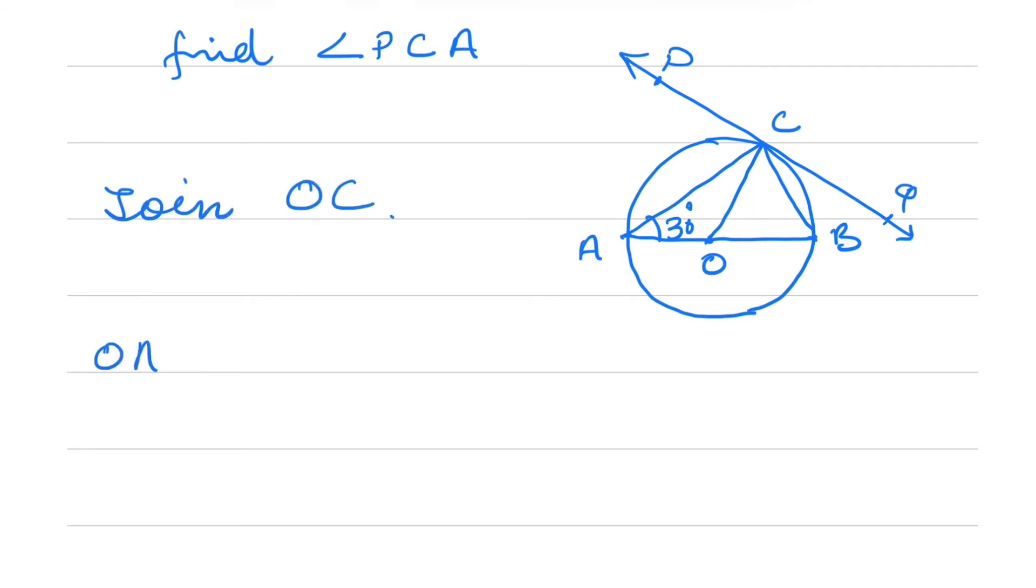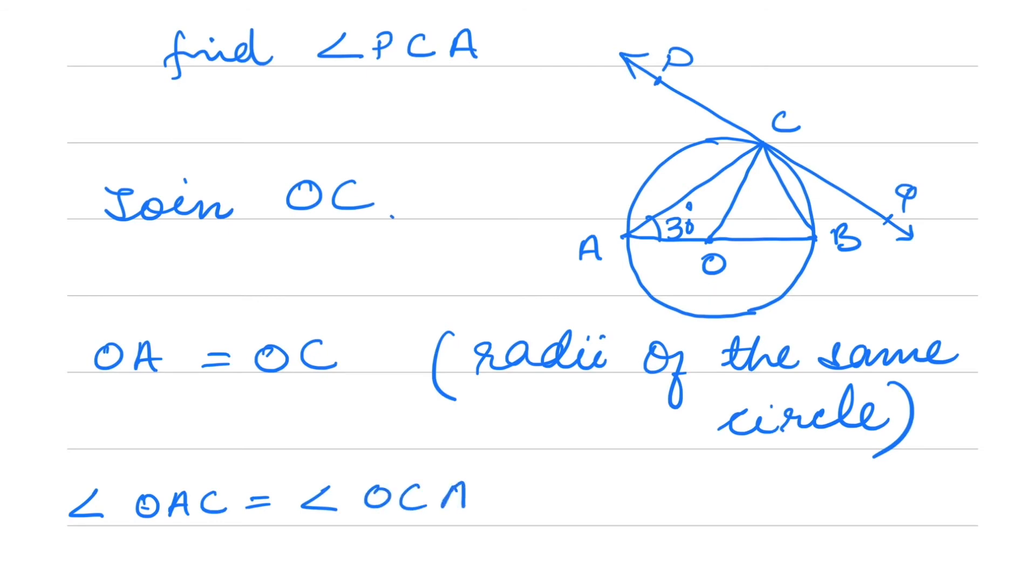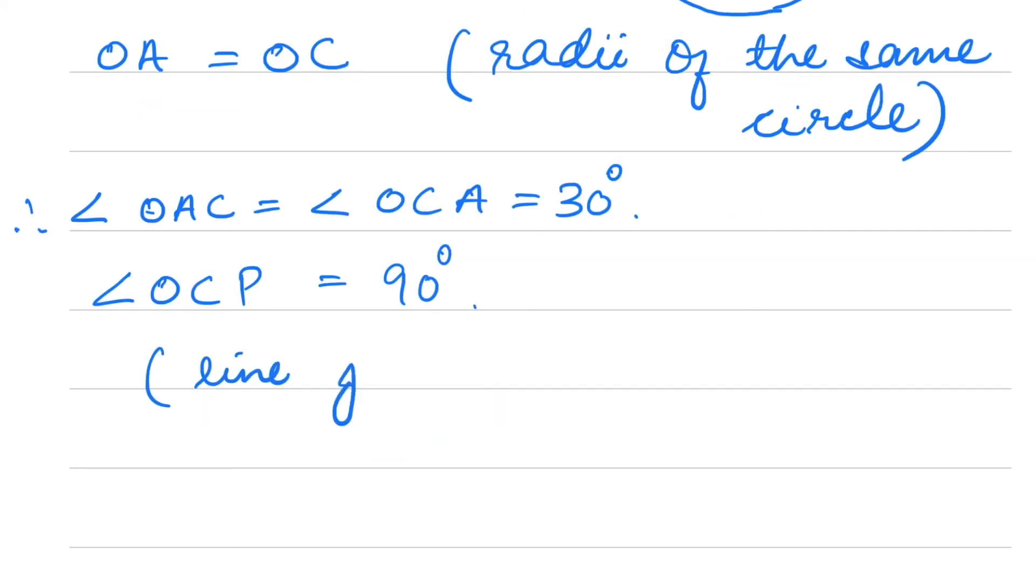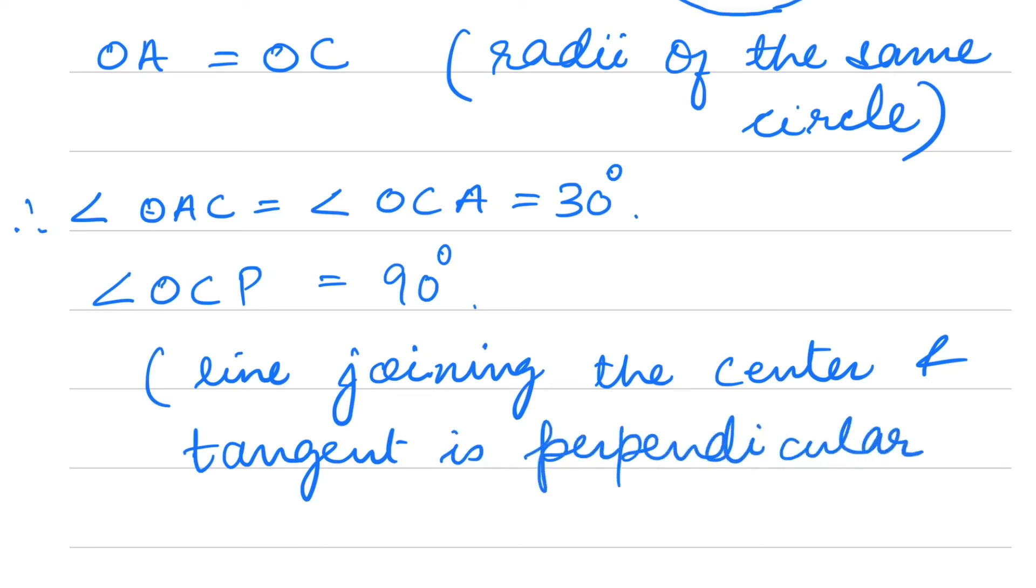OA is equal to OC because they are radii of the same circle. Therefore, angle OCA equals angle OAC, which is 30 degrees. The radius is perpendicular to the tangent.